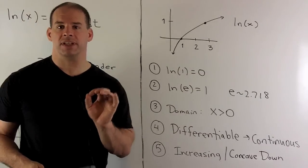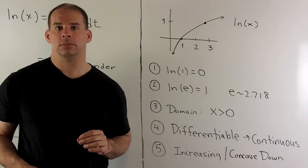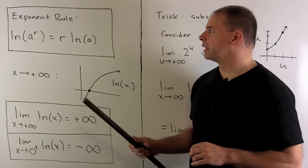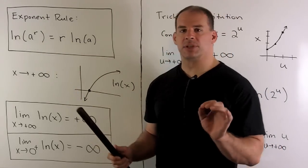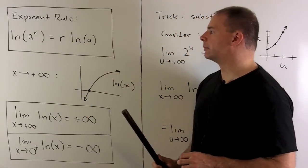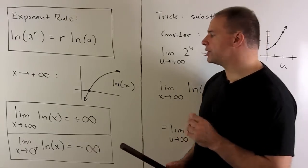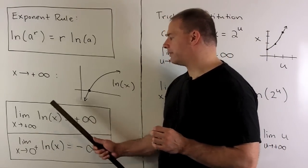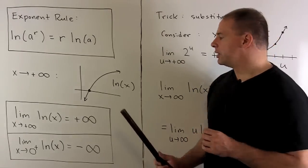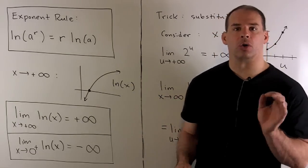The only thing we have left is to check the end behavior, and we're going to get that using the exponent rule. Our exponent rule for logarithm states: if we take the natural log of a to some power r, we're allowed to take the exponent r and bring it down in front. We're going to use this to show two limits. First, the limit as x goes to plus infinity of natural log of x is equal to plus infinity — as we let x go off to the right, the values of natural log of x grow without bound.